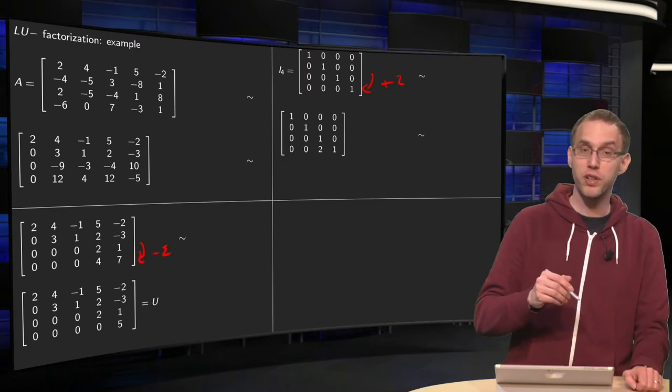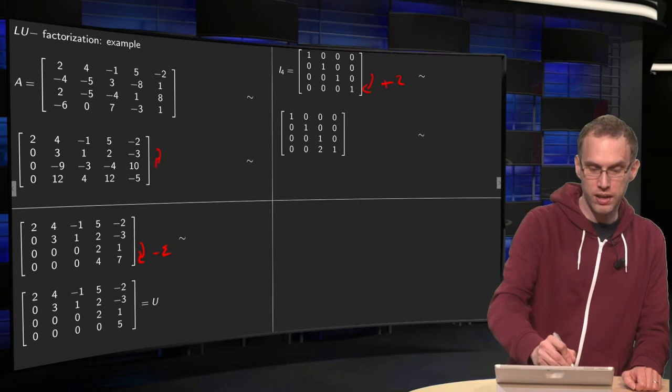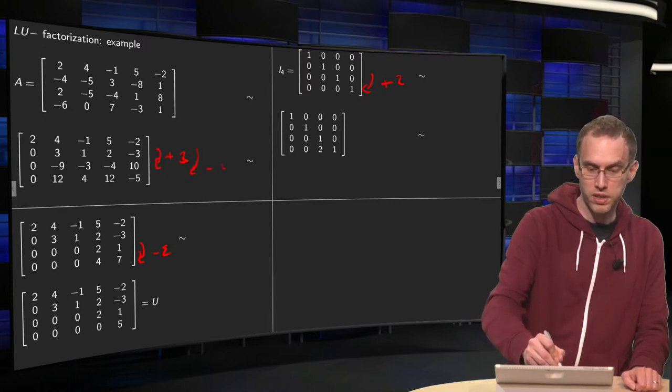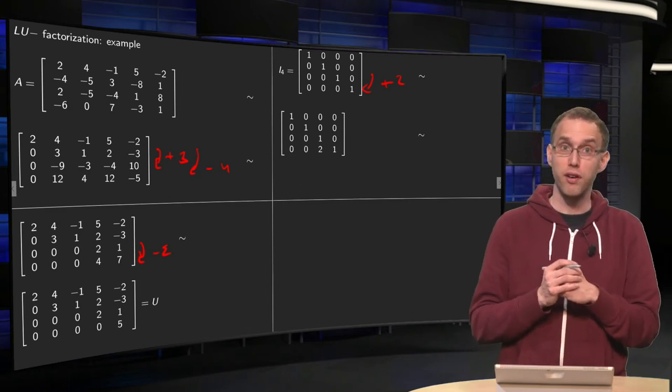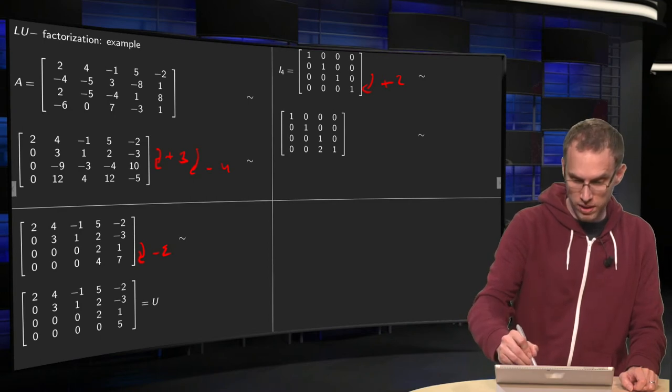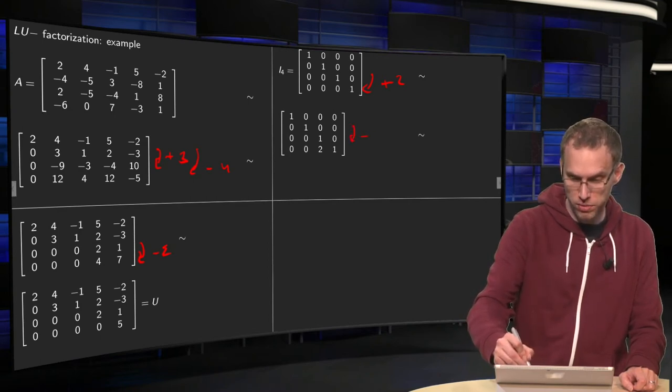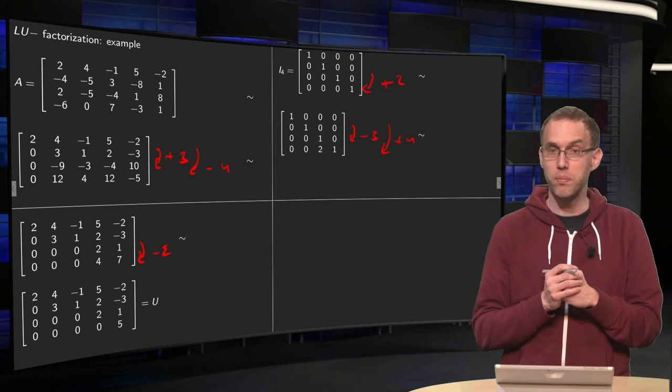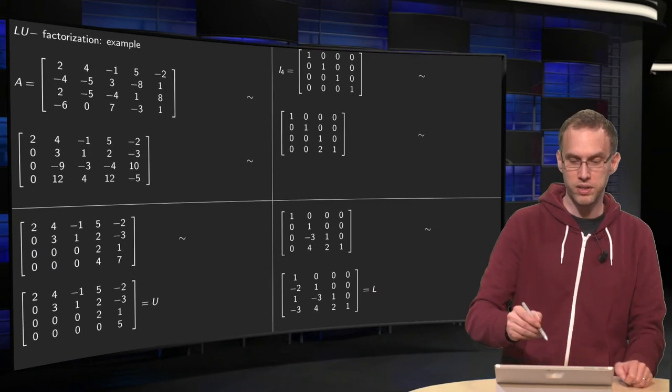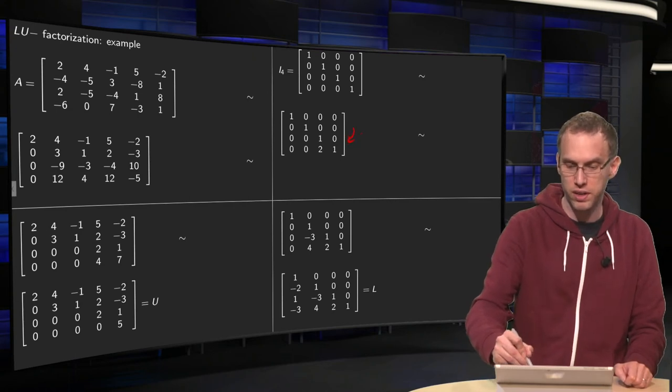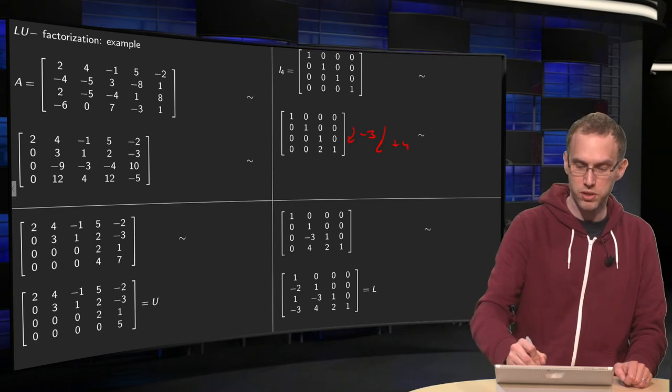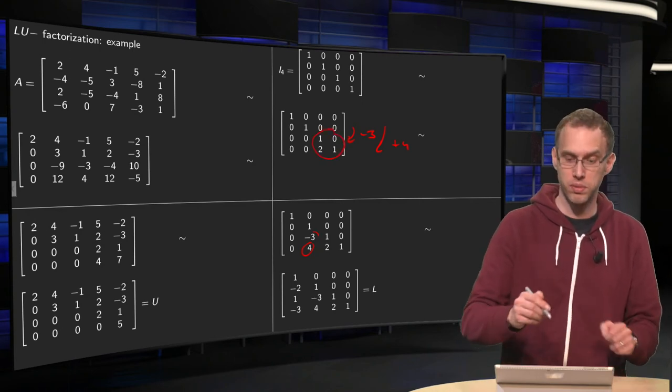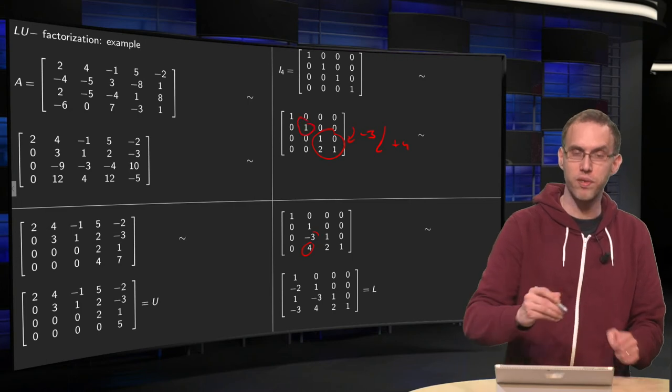What's the next step? In the second step, we added the second row 3 times to the third row and subtracted the second row 4 times from the fourth row. Now, we subtract the second row 3 times from the third row and add the second row 4 times to the fourth row. We get the -3 and +4 over here. Notice that this addition doesn't do anything with this part of the matrix, because you're adding something which only has a 1 here.